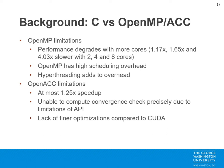OpenACC does a little bit better with a 1.25x speedup. However, it is unable to precisely compute the convergence check due to the limitations of the API, which limits its potential for speedup. It simply lacks the finer optimizations and specifications available with CUDA. Thus, we opt to use CUDA for our parallel implementations.